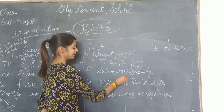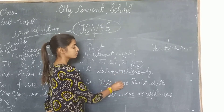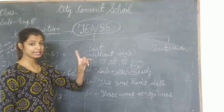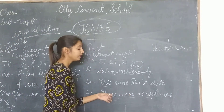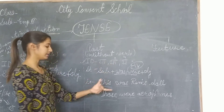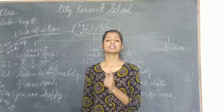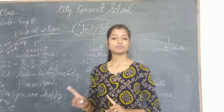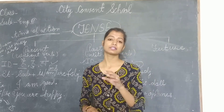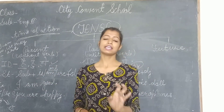Yahan 'was' lagana hai, yahan 'were' lagana hai. Jaise: Those were arrow plays — ve arrow plays the. Toh yahan ID kya honi chahiye? Tha, thi, the. Aur structure kya hona chahiye? Subject + was/were + Object. Present tense mein: Subject + is/am/are + Object. I ke saath 'am', he/she/it/name ke saath 'is', you/we/they ke saath 'are'.